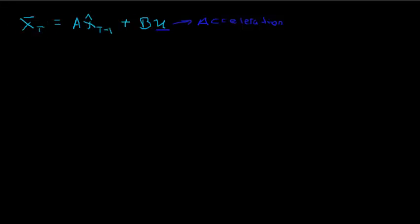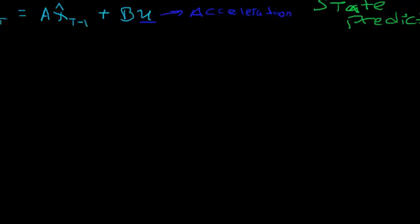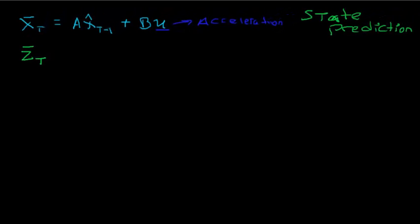So x_bar(t) is our state prediction. There are a couple of other variables that we predict — namely there is also z_bar(t). Usually in the algorithms and linear algebra equations, z_bar(t) is done in place, meaning we don't explicitly calculate it, but it's nice to think of it this way. z_bar(t) is just an estimate of what we're actually measuring. In the common application of Kalman filters we're usually estimating position, and the state variable x_bar(t) contains both position and velocity, so z_bar(t) just extracts the position attribute from this vector.